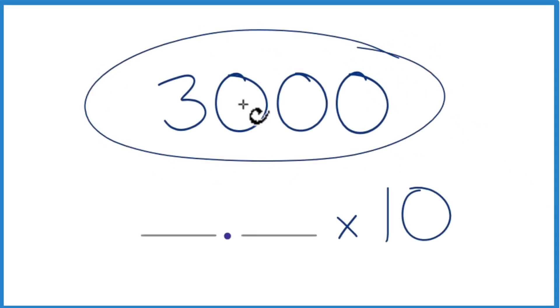All right, let's write 3,000 in scientific notation. So what we want to do is we want to have a whole number, some decimal here, times 10 to some power.